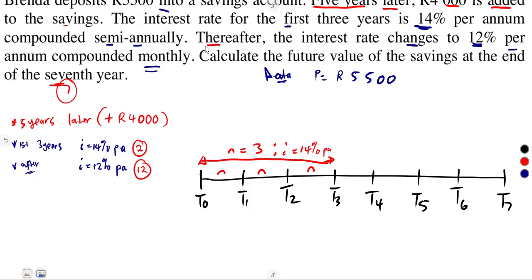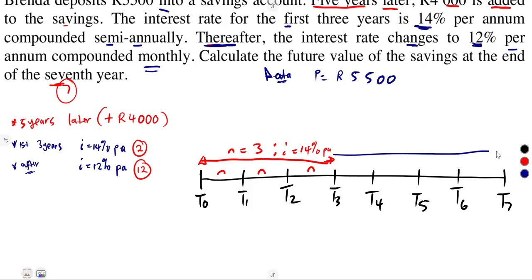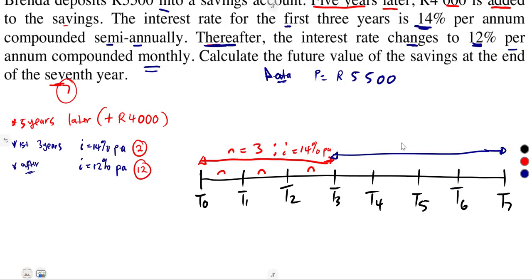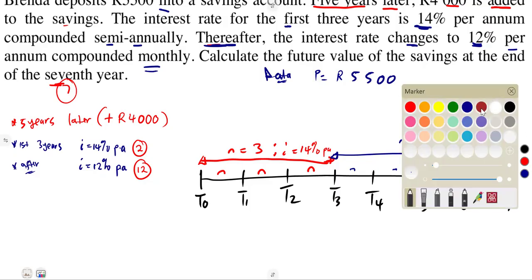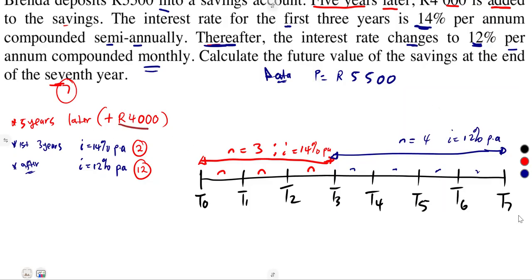Thereafter, the remaining years are affected by the 12% interest rate. Out of the 7 years, after year 3, we have 4 more years — years 4, 5, 6, and 7 — at 12% per annum compounded monthly. But we need to consider what happened with the $4,000 deposit.